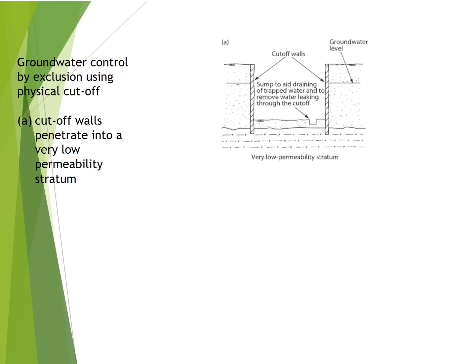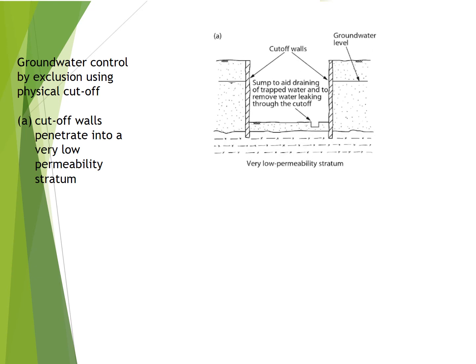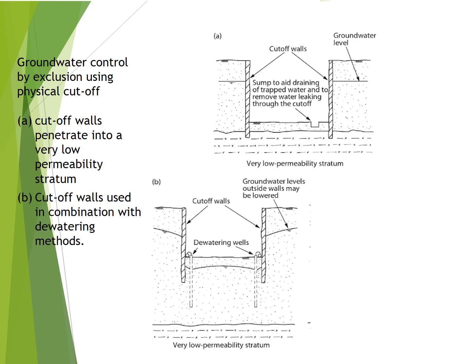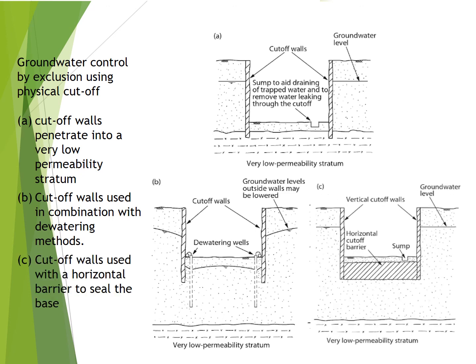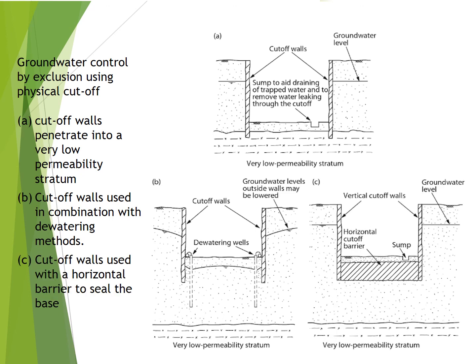Groundwater control by exclusion using physical cut-off can be applied in three configurations: a) cut-off walls that penetrate into a very low permeability stratum; b) cut-off walls used in combination with dewatering methods; c) cut-off walls used with a horizontal barrier to seal the base.